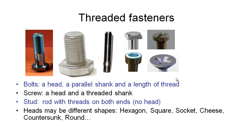Countersunk heads have a conical taper on the underside, and we make matching holes for these bolts to sit into so that the top surface is flush and less likely to catch on things — better for aerodynamic drag when designing aeroplanes and race cars. This example has a cross screwdriver head, commonly called a phillips head, but it can also have allen heads.